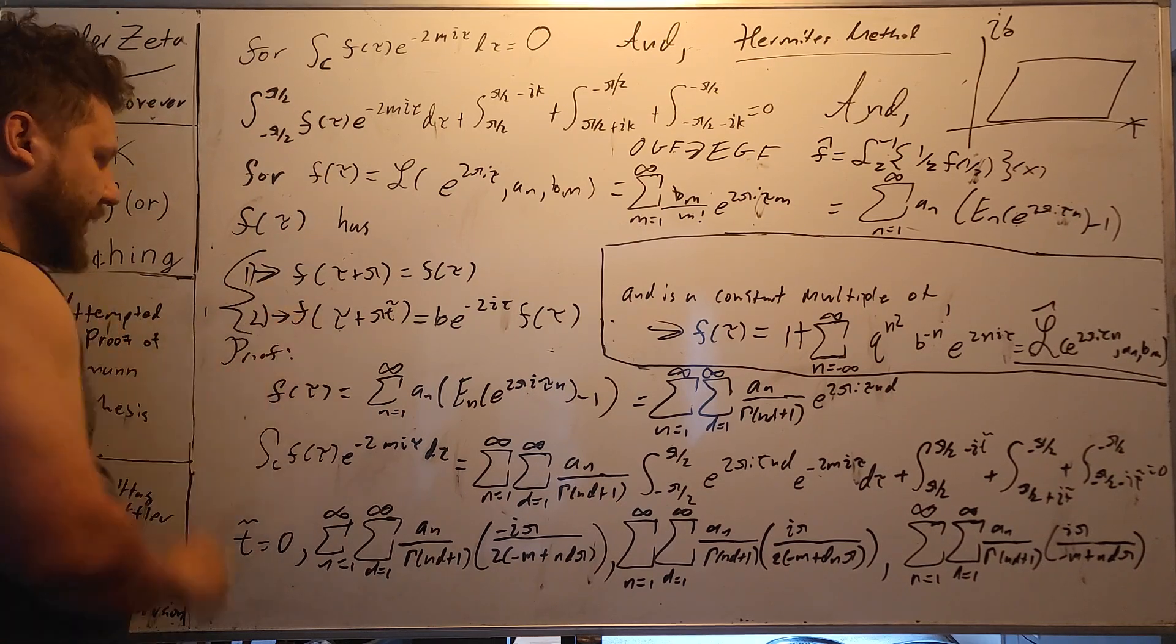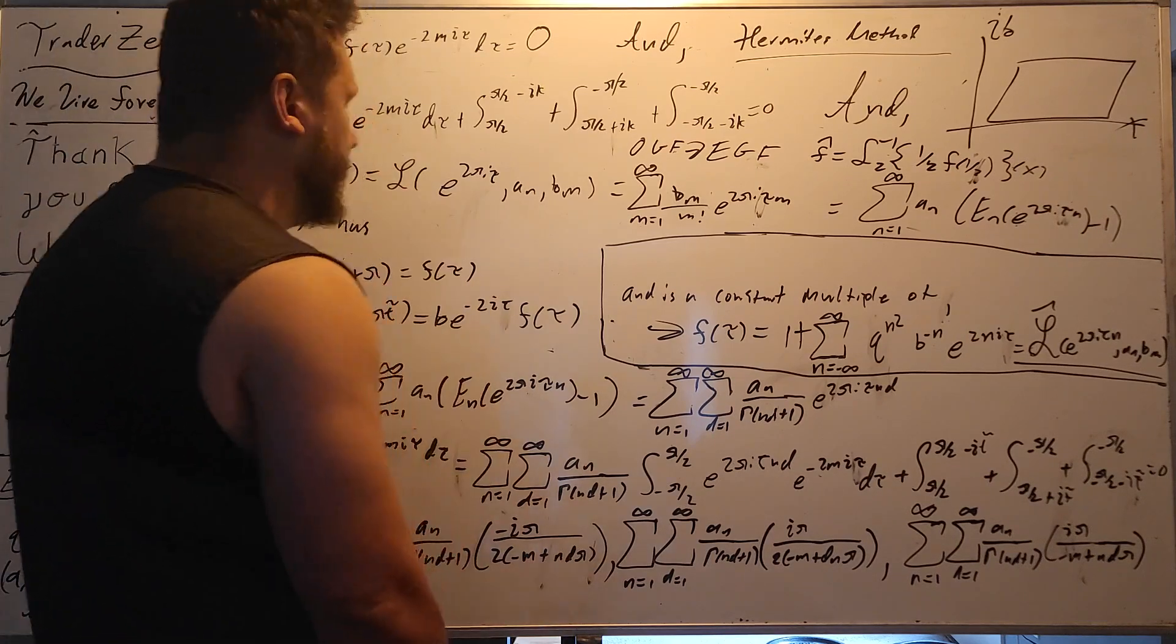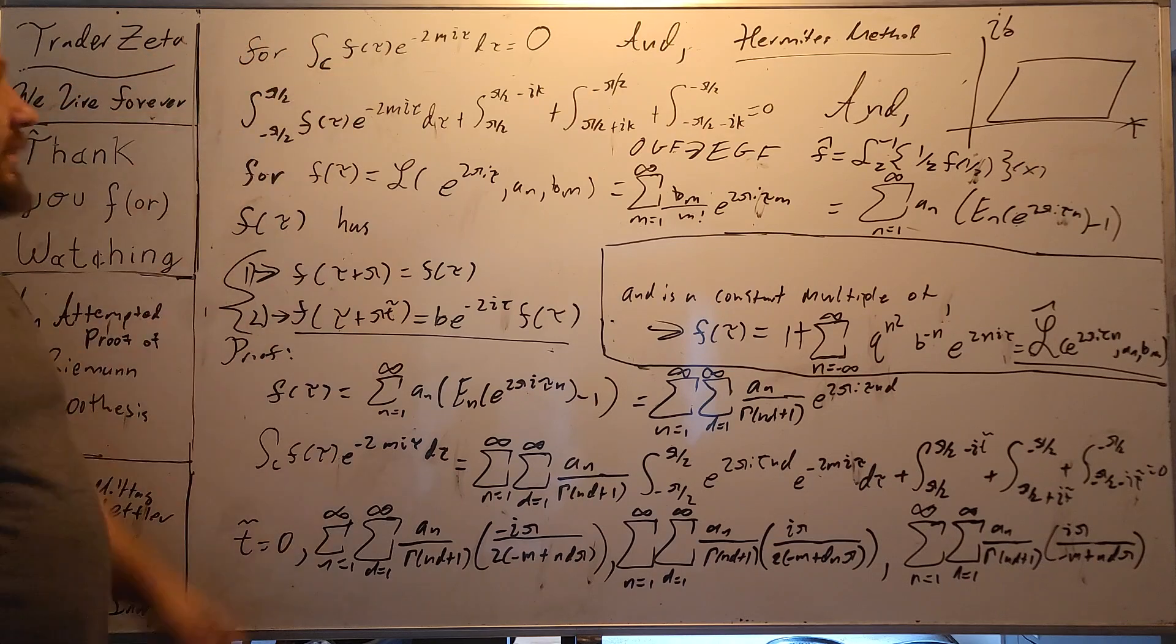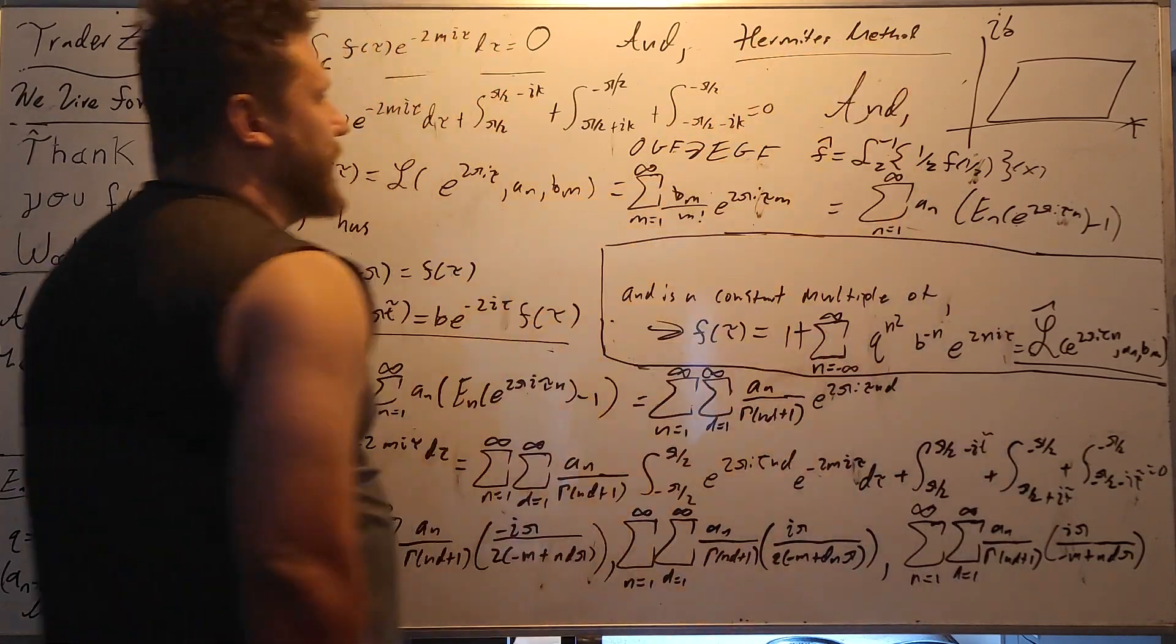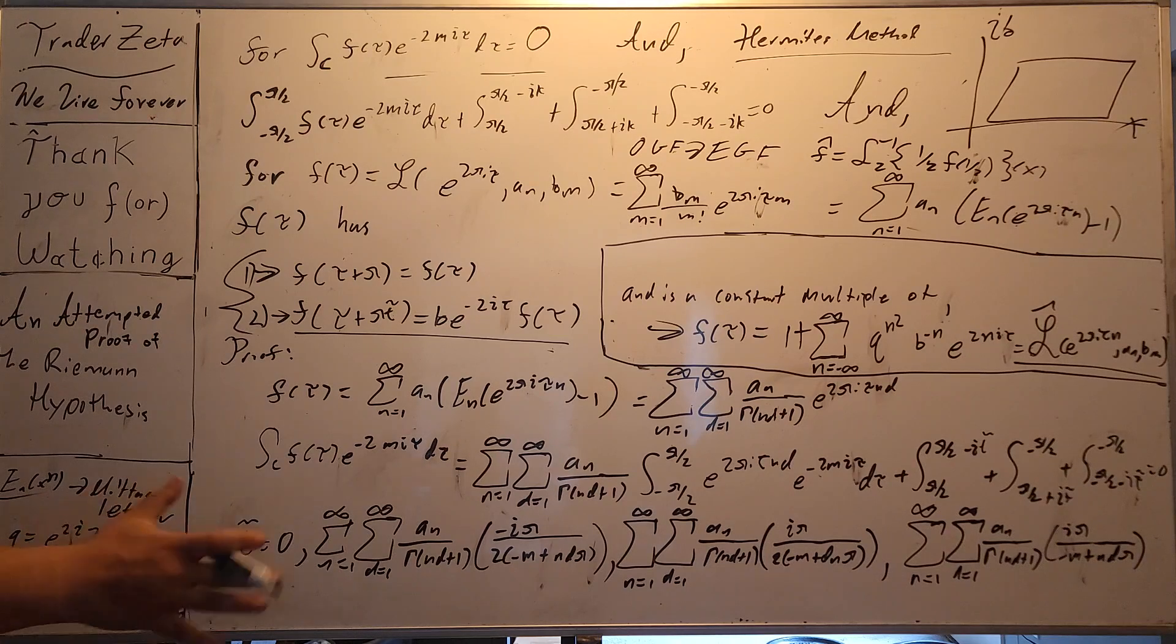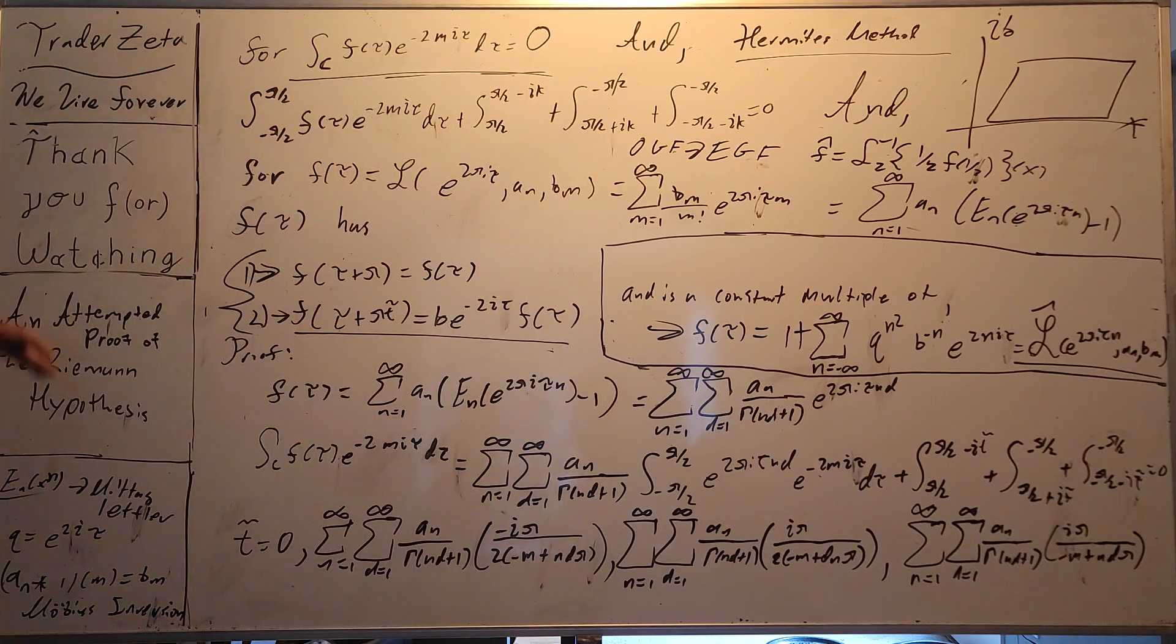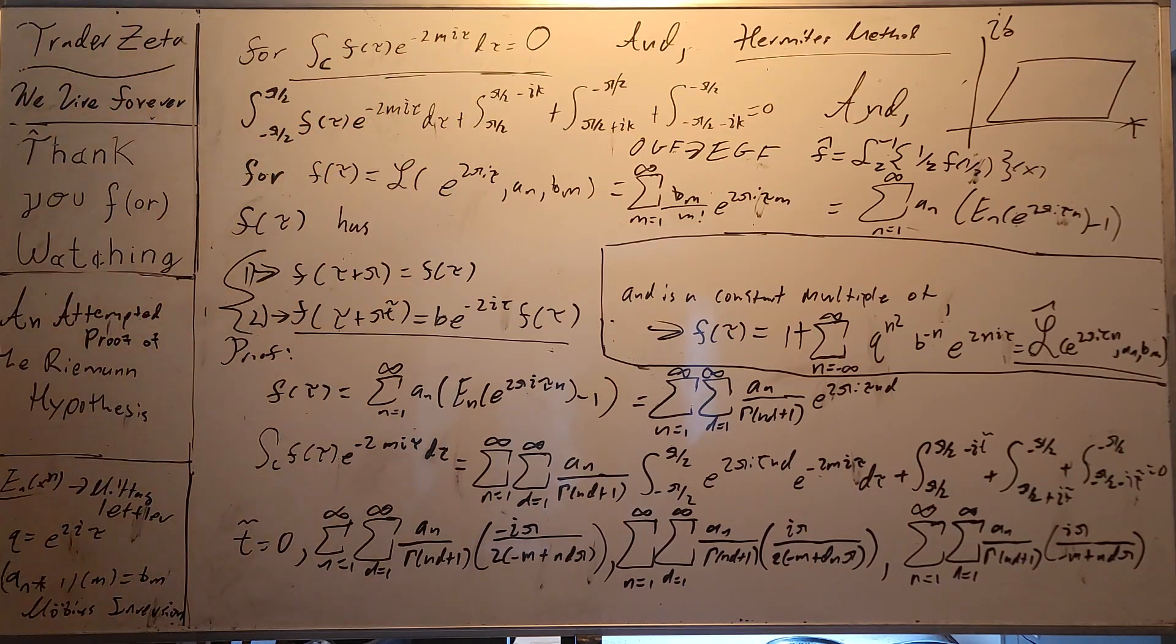Second one, a little bit more complicated to prove, and it seems to be only true under certain conditions. For certain a sub n and b sub n. So this right here, this part, is proved via this contour integral. I'm not sure how to pronounce this person's name, Hermite's method, something like that. It is in the book by Richard Bellman, A Brief Introduction to Theta Functions. You can find it there. That's where I experienced it first.